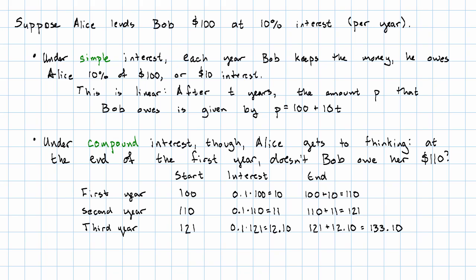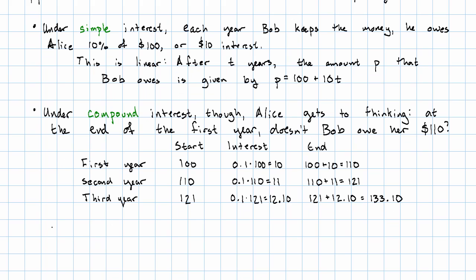The pattern that we see here is every year, we owe more and more money. So every year, we have to pay more and more interest. The pattern we see is that each year, the amount owed is multiplied by 1.1. This is exponential. The amount owed is the starting amount, 100, times 1.1 to the power of the number of years.